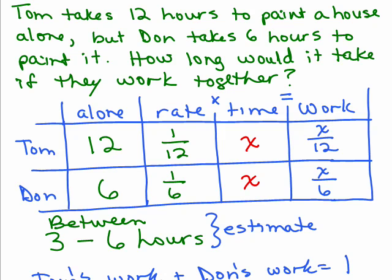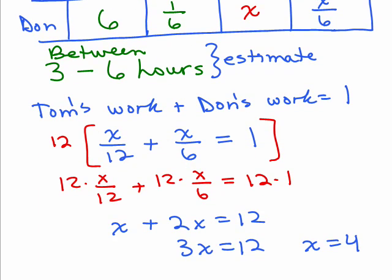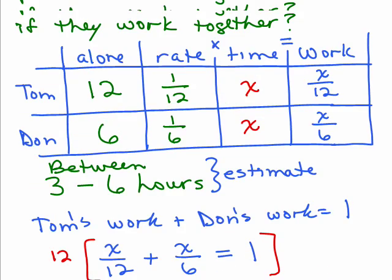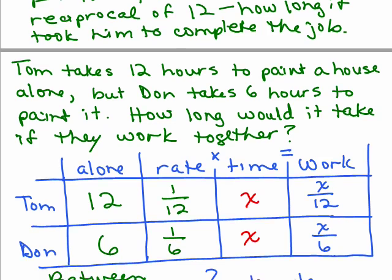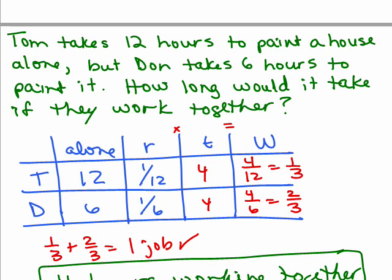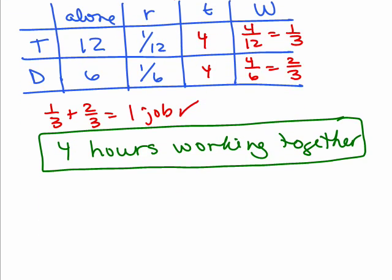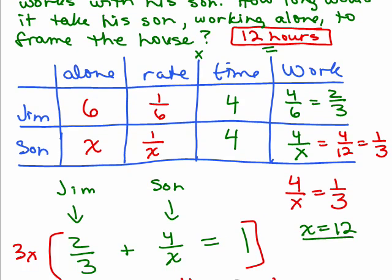And notice we came up that it would take 4 hours if they worked together. Kind of interesting, by taking the same problem and giving you different information, and this time I was asking how long the person who was slower would take. In this problem, I didn't say how long Tom took. So if you look back at that previous word problem, you might notice how similar it is to this one. Just giving you a little bit different information.